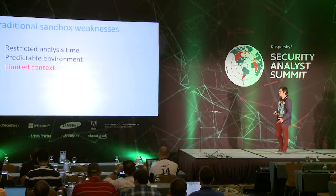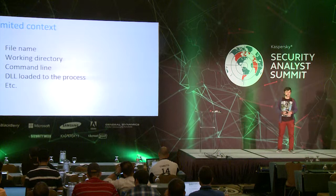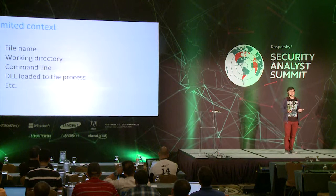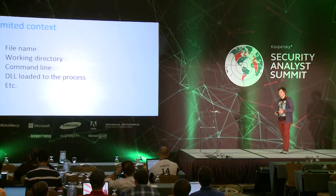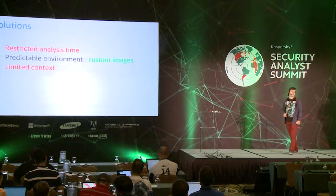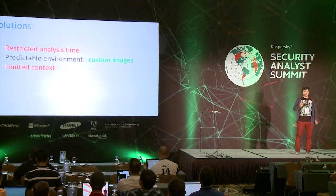The third problem is limited context — when you have only the file in your sandbox, you don't know the working directory, you don't know the command line. We're all well aware that a lot of APTs are actually hack tools that require a command line. If you just have a file, it's just not going to work — you're not going to detect it even if you randomize and improve your sandbox score very well. So we have these three problems, and I want to start solving them — actually starting from the second one, predictable environment, because I think it's the easiest thing we can do: custom images.